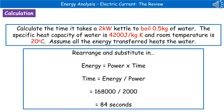The last thing we need to do is find the time using energy = power × time. Rearranging, time = energy ÷ power. Substituting in our values: 168,000 ÷ 2000 gives us an answer of 84 seconds.